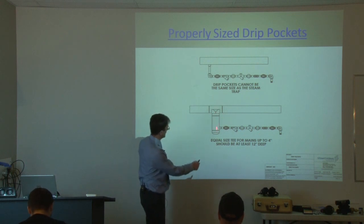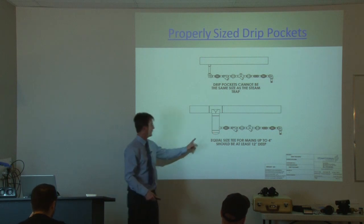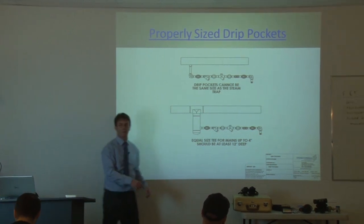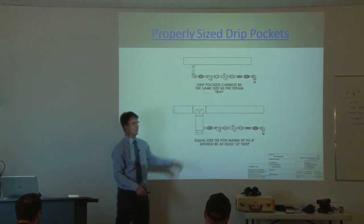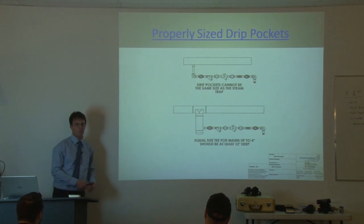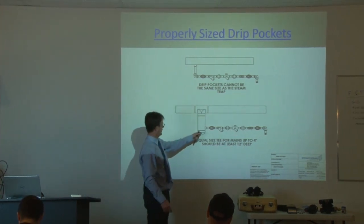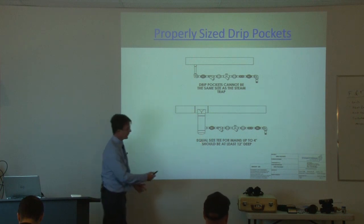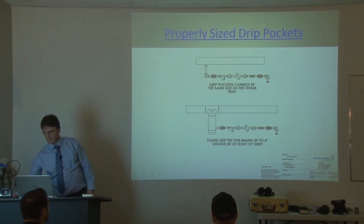So your drip pocket, this part is what we call a drip pocket, and underneath is what we call a dirt pocket. Normally, we'd want to see a valve. So we put a valve underneath, and that allows you to blow down any dirt that accumulates. Because steam pipes are dirty, a lot of times they degrade over time, and you'll have debris that builds up in your dirt pocket. So if you have a valve here, the pressure behind it will allow you to just blow down the junk that builds up in there.